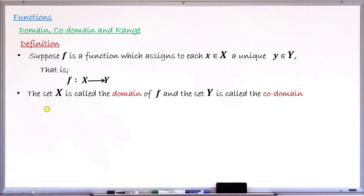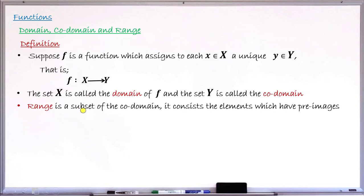Now let me define what will be the range. Range is nothing but a subset of the codomain. From your codomain — that is your second set — some elements form a subset of set Y. Those elements in your codomain that, when you trace them back, have pre-images in the very first set — it is those elements that form that subset, and that subset is now called the range.